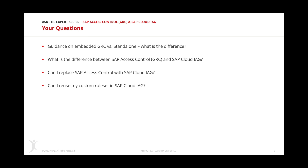There were a lot of questions regarding IAG, which is a new cloud solution from SAP. One common question was: what is the difference between the Access Control on-premise solution and the Cloud IAG — Cloud Identity Access Governance — as a SaaS solution? At the end of the day, IAG does not directly replace Access Control. It's a completely newly developed solution on the Business Technology Platform, providing similar capabilities to what Access Control does on the on-premise side.